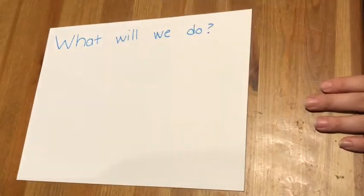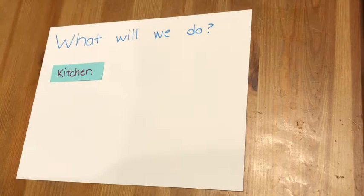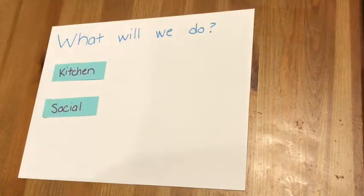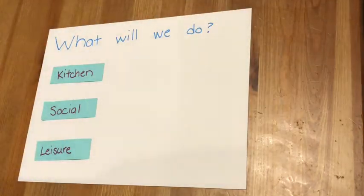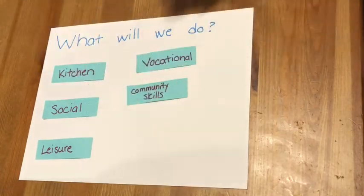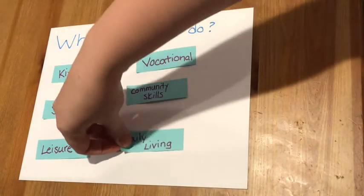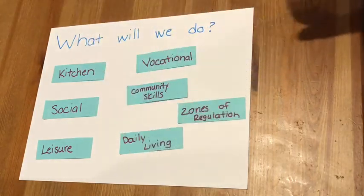So that leads us to what topics will we talk about? We'll work on kitchen skills, social skills, leisure skills, vocational skills, community skills, daily living skills, and zones of regulation.